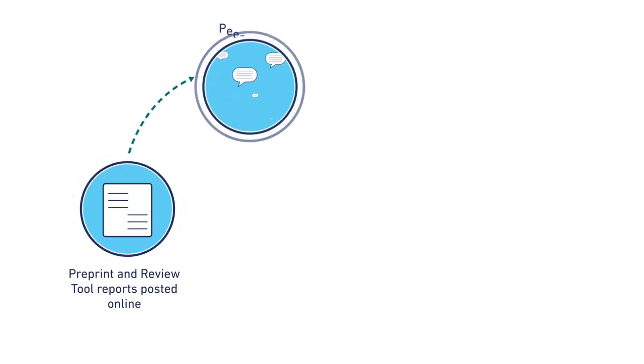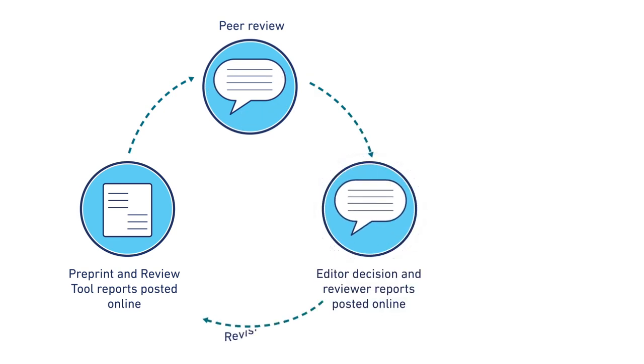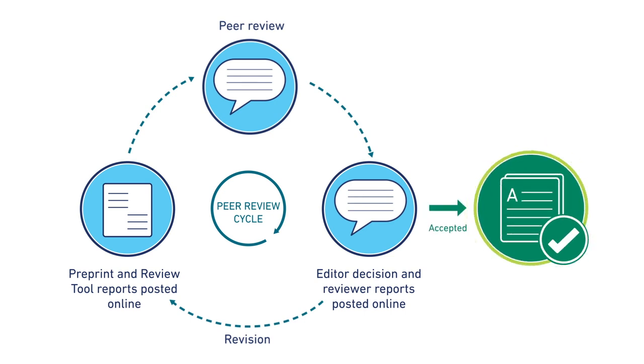As soon as the first pre-print is posted, the article undergoes full transparent peer review, and the editor and reviewer reports are posted alongside the pre-print. All versions of an article stay on the platform, culminating in a final published version of record upon acceptance. All article versions are linked to each other, gathering citations and allowing for easy monitoring.